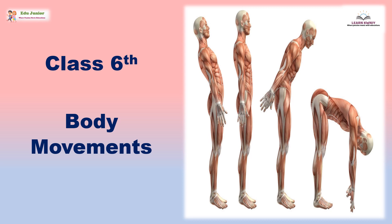Human beings and other animals show two types of body movements. First, movements of the body parts like mouth, head, backbone, arms, hands, legs and foot, etc. Second, movement of the whole body from one place to another, which is called locomotion. To understand how movement of body parts and locomotion takes place, we should study the bones forming a skeleton, the joints between bones, and the muscles which make bones move at joints.